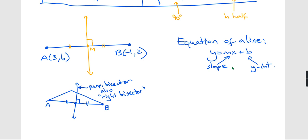We know that their slopes are negative reciprocals of each other. So if I can find the slope of AB, I can use that to find the slope of my perpendicular bisector.